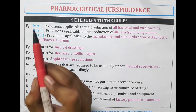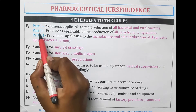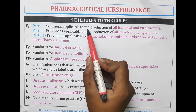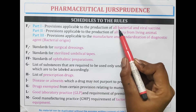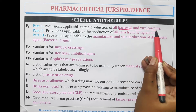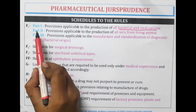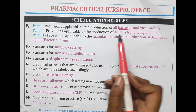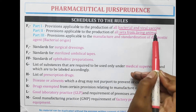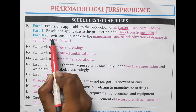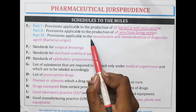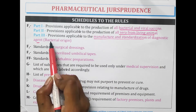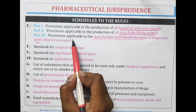Schedule F1 contains three parts. Part 1: provisions applicable for the production of bacterial and viral vaccines. F1 Part 2: provisions applicable for the production of all sera from living animals. F1 Part 3: provisions applicable to the manufacture and standardization of diagnostic agents which are of bacterial origin.